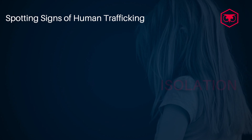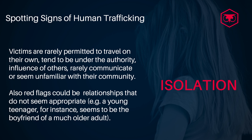The second sign is isolation. Victims are rarely permitted to travel on their own and tend to be under the authority or influence of others. You can see that they will rarely communicate and seem generally unfamiliar with the community around them. In some cases there could also be a strange relationship — for example, a young teenager who seems to be the boyfriend or girlfriend of someone much older.